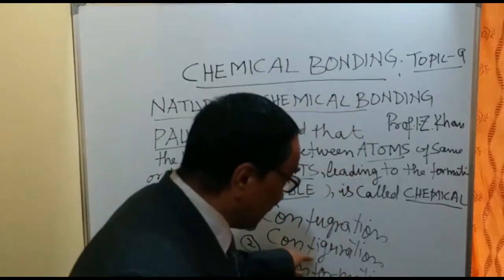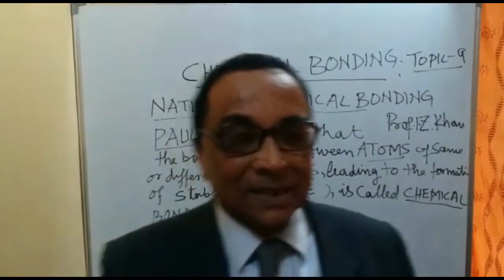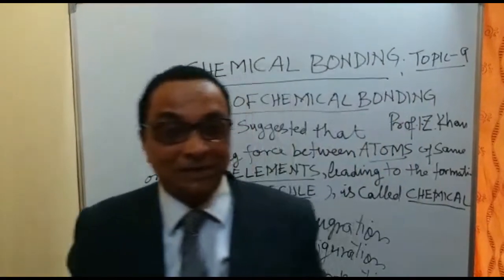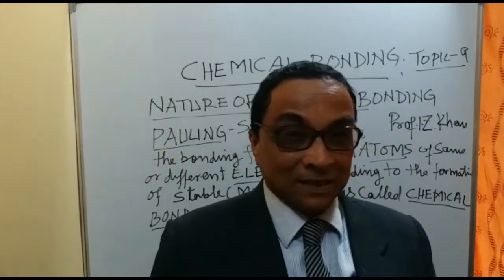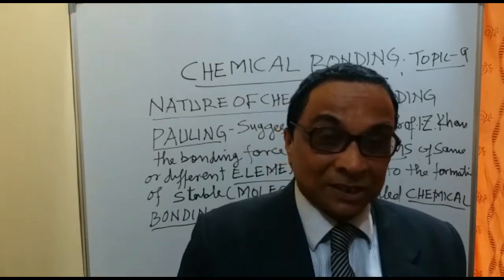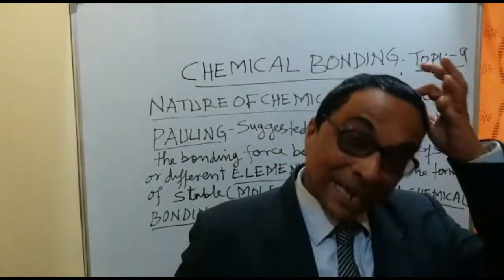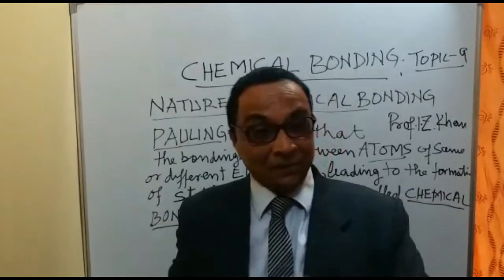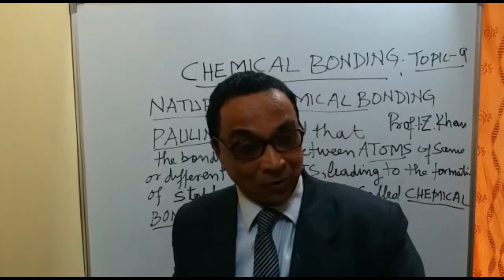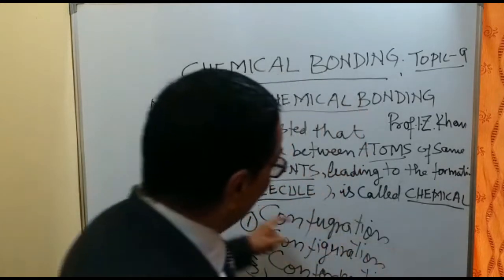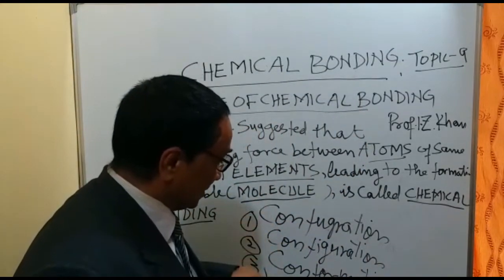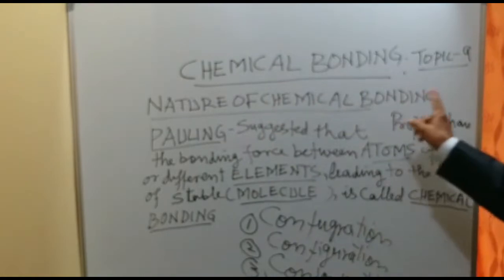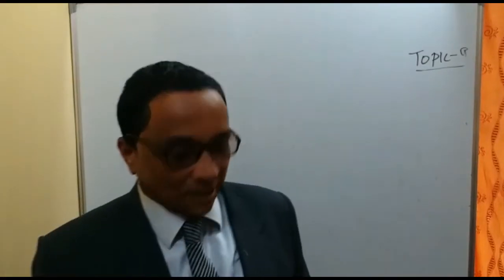Configuration of an atom means it is the arrangement of electrons in shells and subshells. Conformation means the arrangement of elements within the molecule — it has a spatial concept, meaning the different elements of the molecules are arranged in space. For example, taking cyclohexane: its confirmation can be in chair form, boat form, half-twisted, or full-twisted. That is the difference among these three terms: configuration, conformation, and confirmation.